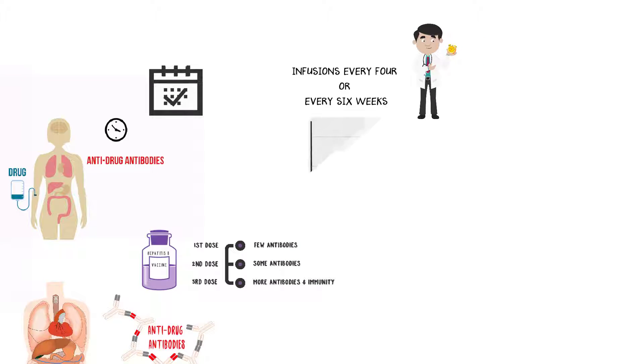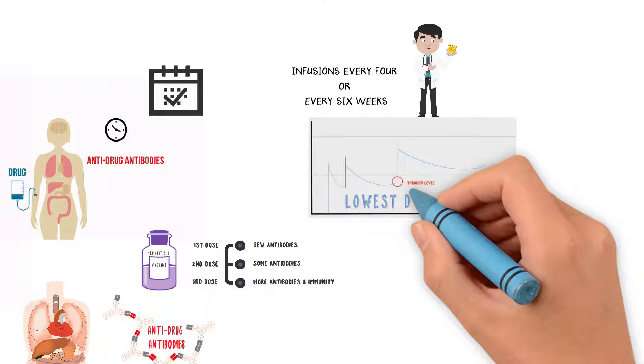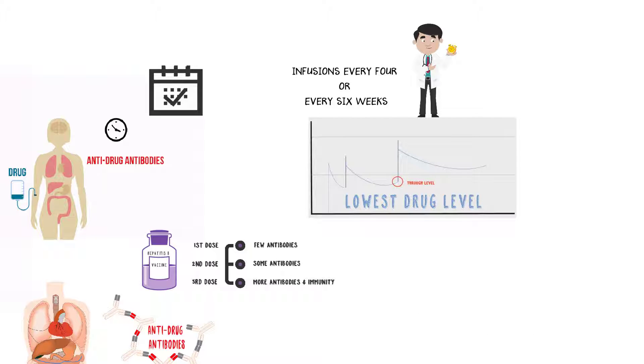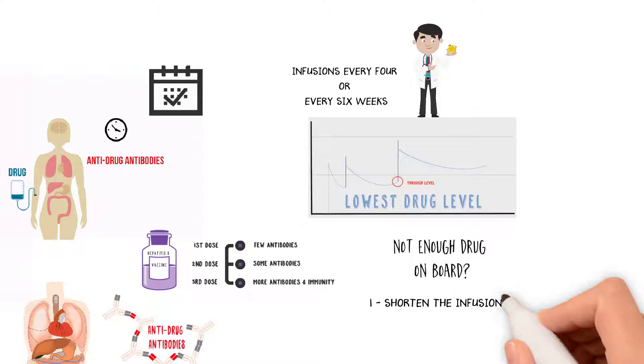Another way to do that is to check the drug level at trough, which means the very last day or just before the infusion, to make sure that you can see what the lowest drug level is. That's to make sure that there is enough drug on board. If there is not enough drug on board, the options are either to shorten the infusion intervals or to give more drug.